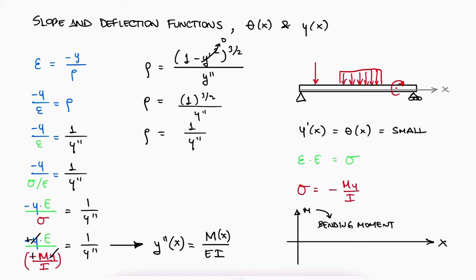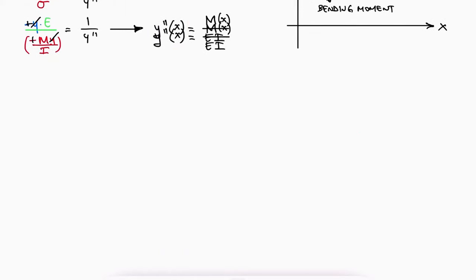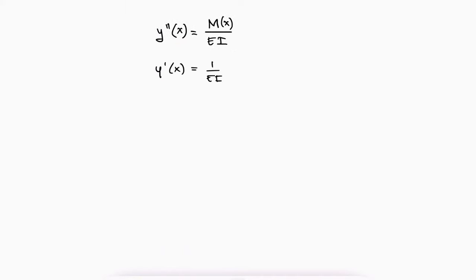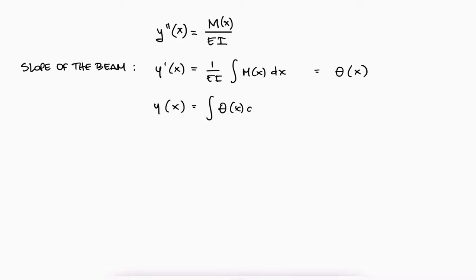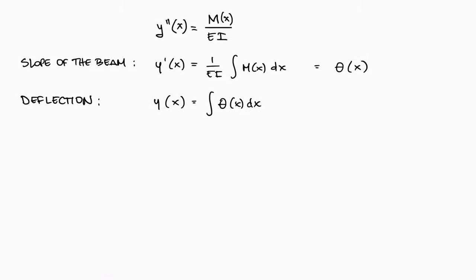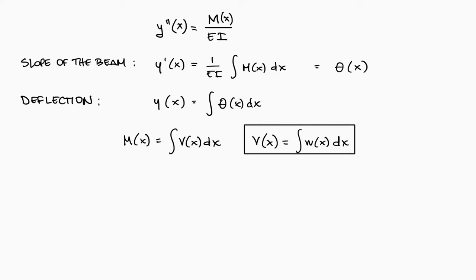This expression is very important to calculate deflections. If we know the moment as a function of x, we can find the second derivative, integrate once to find the slope of the beam at any point along its axis, and integrate one more time to find its deflection at any point along its axis. Remember that the moment is the integral of the shear, and the shear is the integral of the distributed load.